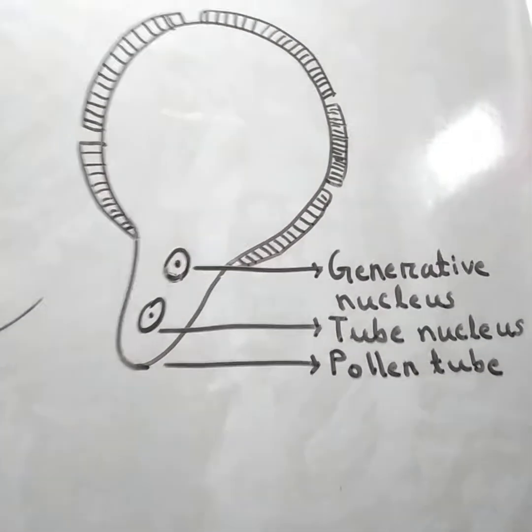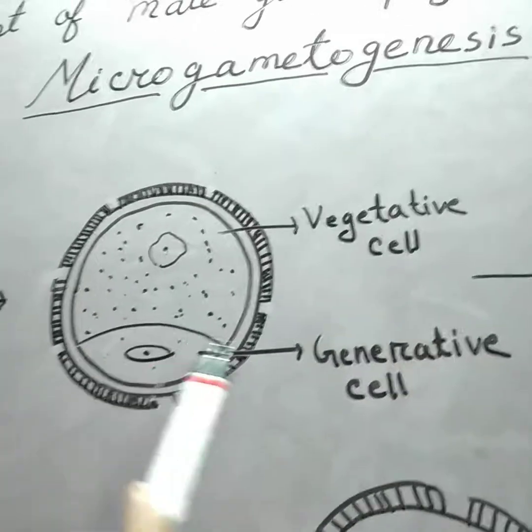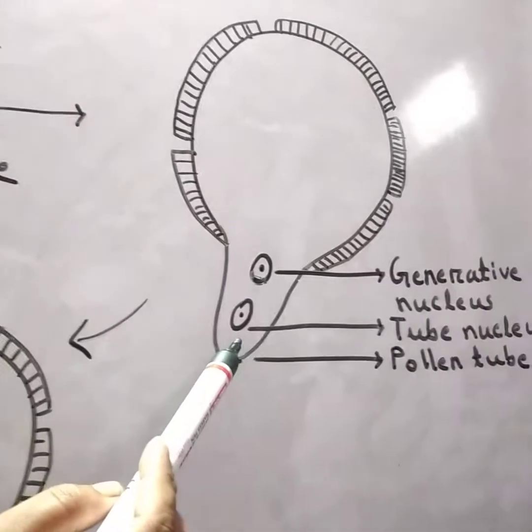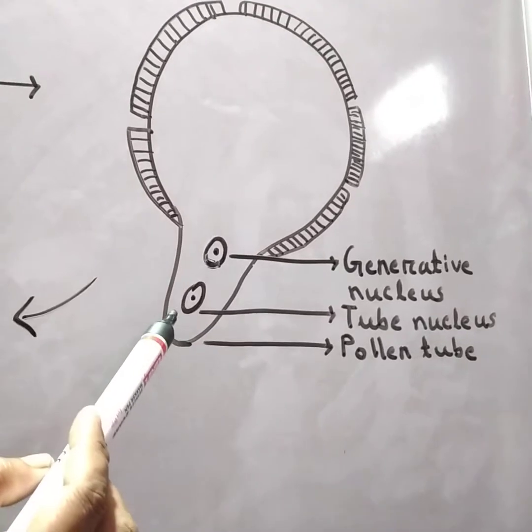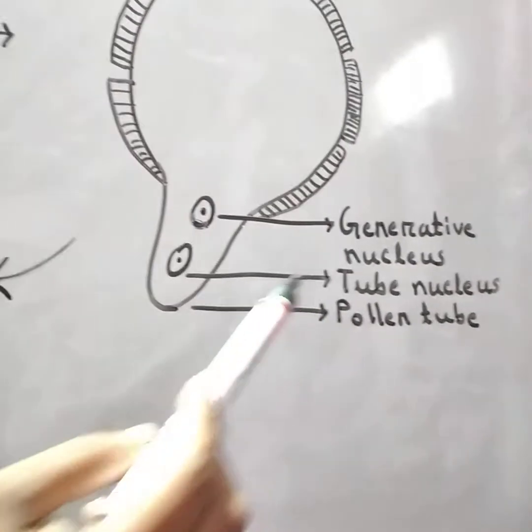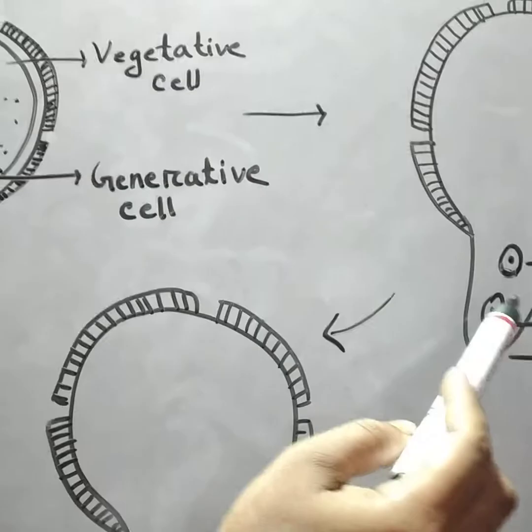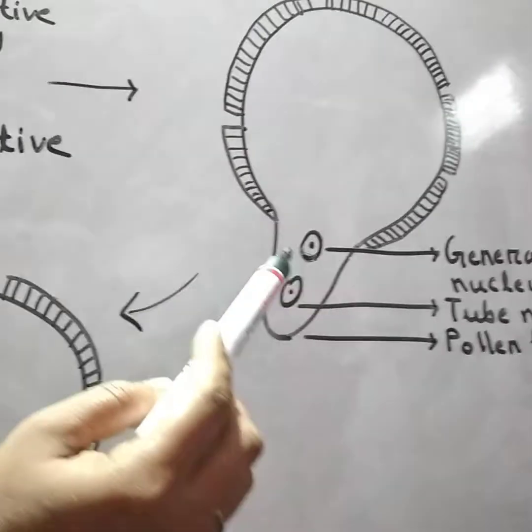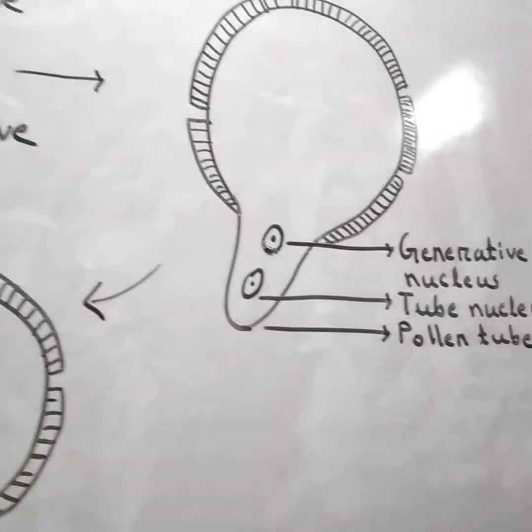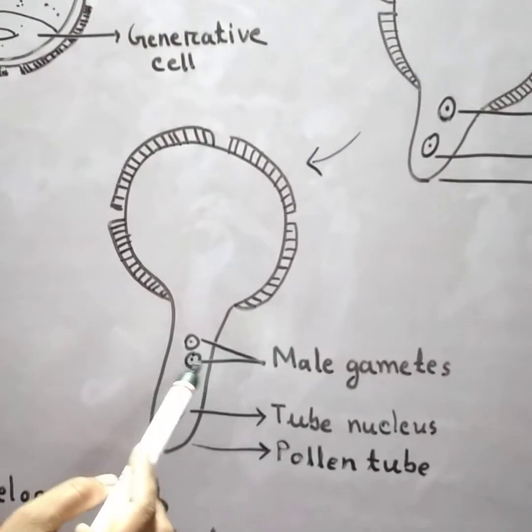The vegetative nucleus enters the pollen tube and is then known as tube nucleus. It is followed by generative nucleus, and further the generative nucleus divides into two male gametes.